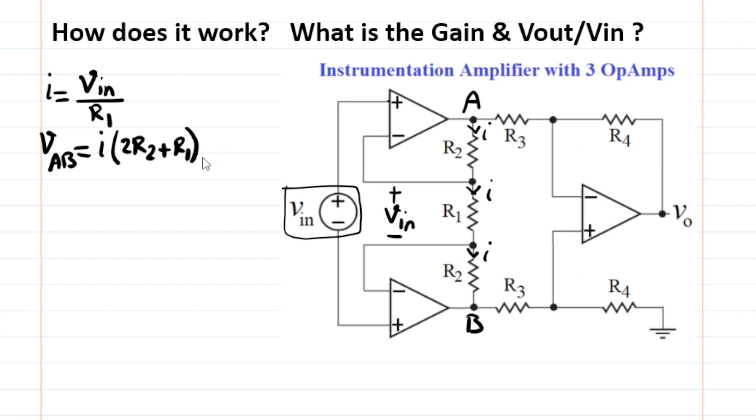And if you just substitute for I from this equation, you can just simply find that the outcome is, as if you say, is 1 plus 2R2 divided by R1 times Vin. Very nice. So we found VAB as a function of input voltage.